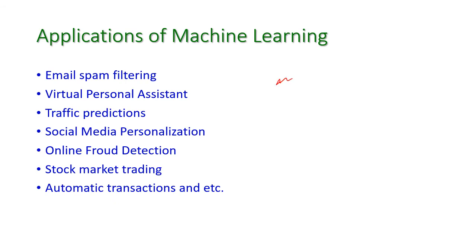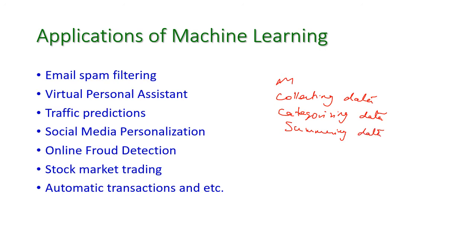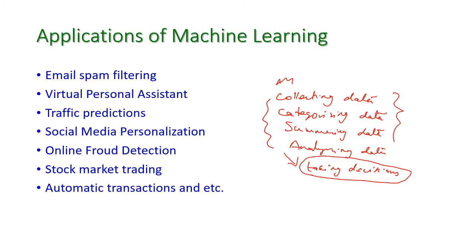Machine learning is very important for collecting data, categorizing data, summarizing data, and analyzing data. All these are used for taking decisions, and machine learning plays a major role in all these tasks.